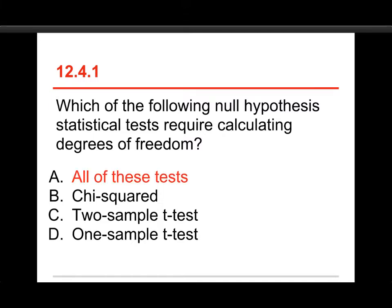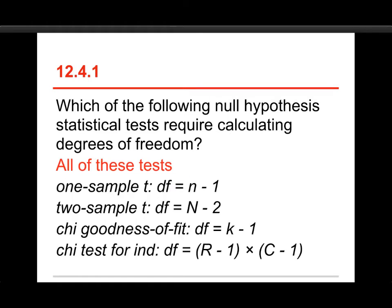The answer is all of them. Of these three tests, all of them require degrees of freedom. In fact, here they are. For the one-sample t, the df is n minus 1.